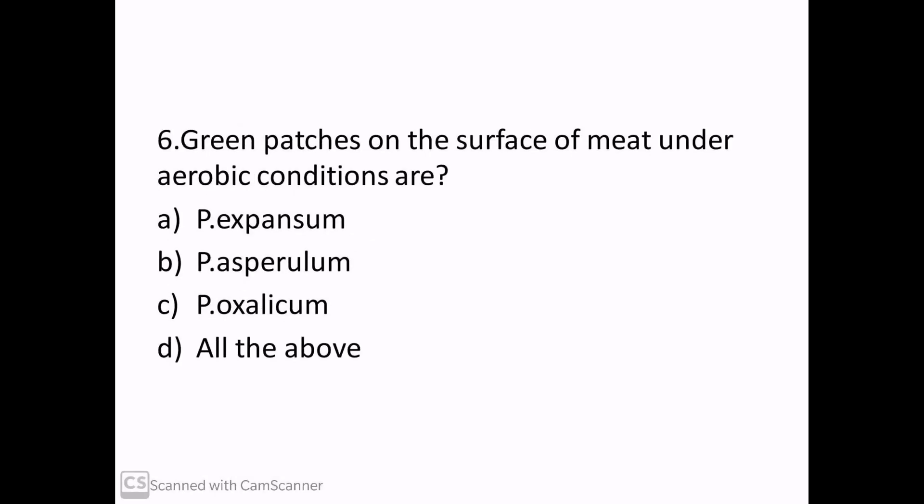Green patches on the surface of meat under aerobic conditions are: Penicillium expansum, Aspergillum oxalicum, or all the above. Correct answer: Option D, all the above.